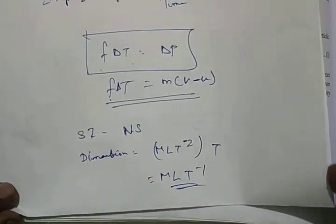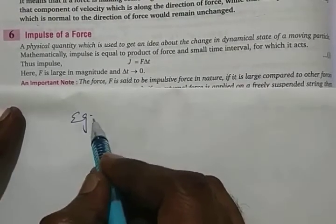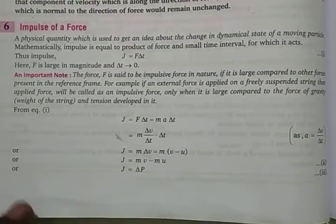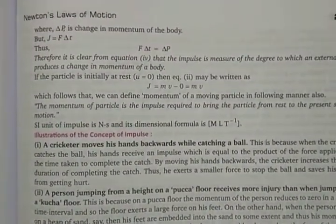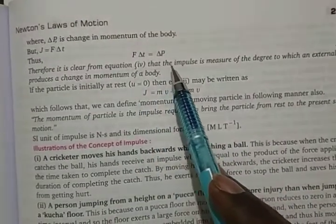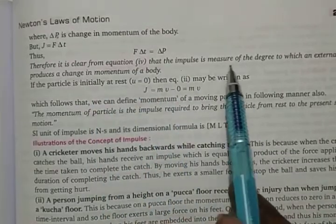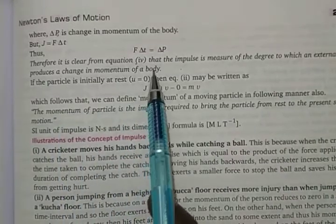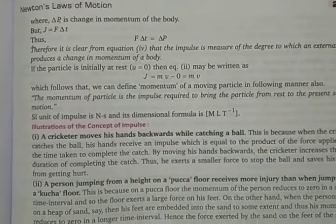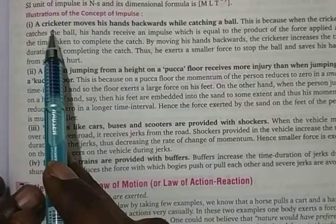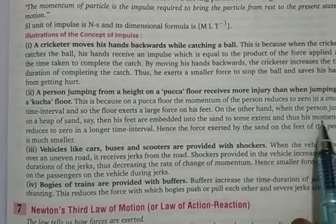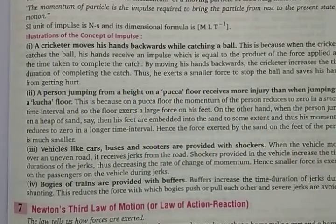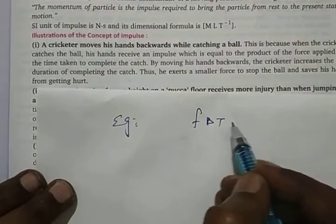Now let us see the examples of impulse. The formula J equals F·delta t equals delta p is given in the book as well. The definition: impulse is a measure of the degree to which an external force produces a change in momentum of a body. Now, why does a cricketer move his hands backwards while catching a ball? That is something to do with impulse.